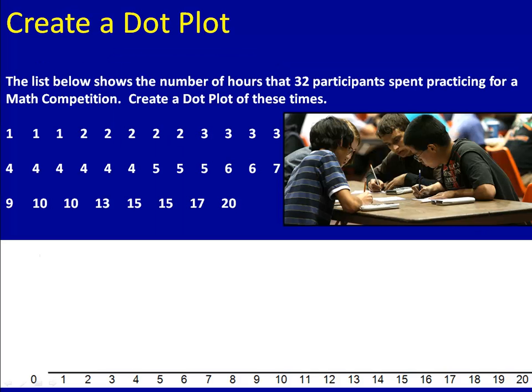We have some students who are participating in a math competition. So that they do well, they spend some time practicing in advance. When each student came to the competition, we asked them how many hours they had studied. We recorded the information and we see that on the screen. We begin by tallying everything up. Notice we have three people who studied for one hour. That means there are three dots above the number one.